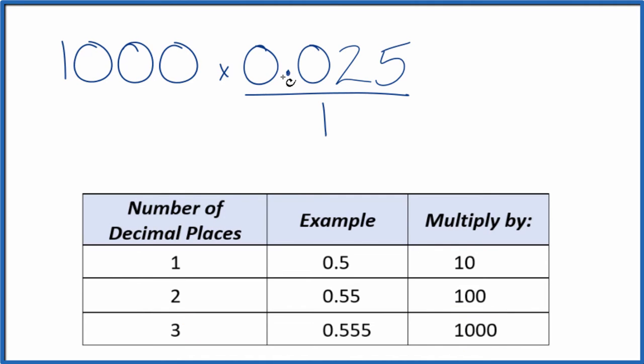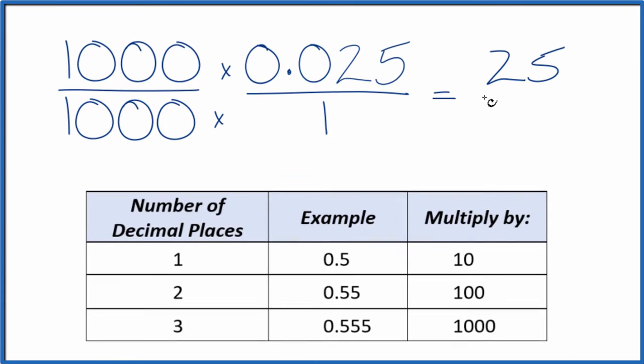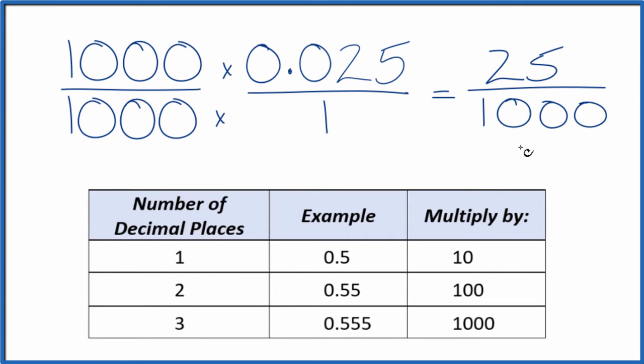So 1,000 times 0.025, that's just 25. We have our whole number, but we can't just multiply the numerator by 1,000. We also need to multiply the denominator by 1,000. 1,000 over 1,000 is just 1, so we're only multiplying by 1. We don't change the value, just the way it's represented. 1,000 times 1 is 1,000, and now we have our fraction 25 over 1,000.